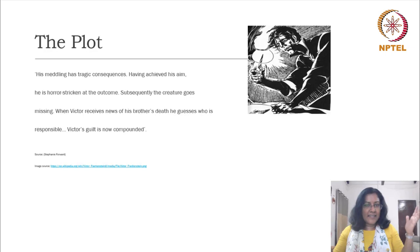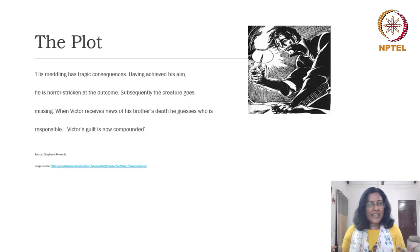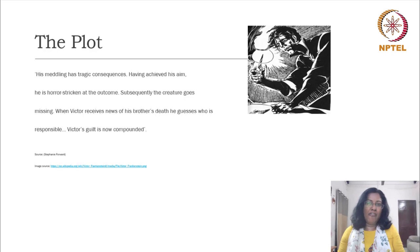When Victor gets to hear about the death of his brother William, he realizes who is behind the death. Victor becomes extremely guilty because someone else is accused for the crime of murdering Victor's brother. That person is also put to death — that is Justine Moritz, who is very innocent of this crime. So you can see how Victor becomes massively responsible for the deaths of innocent lives.